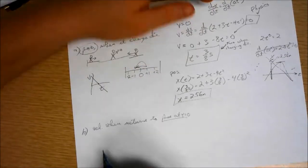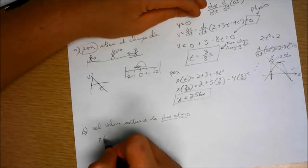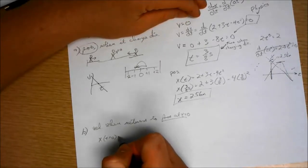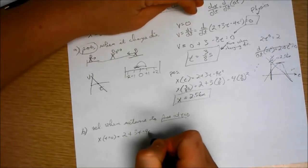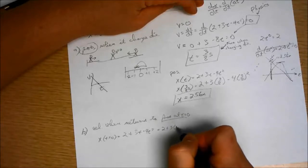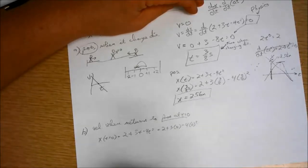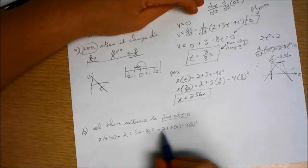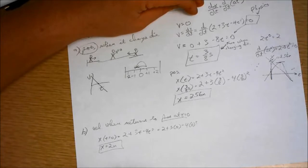First, we're after velocity when it returns to position at t equals 0. So first, let's find the position at t equals 0. So x of t equals 0 equals 2 plus 3 times 0 minus 4 times 0 squared. So x equals 2 meters. That is the position at t equals 0.